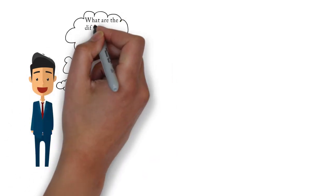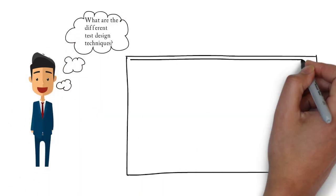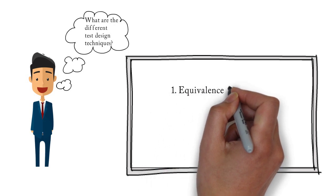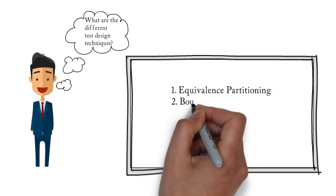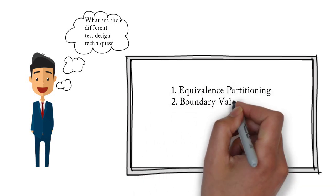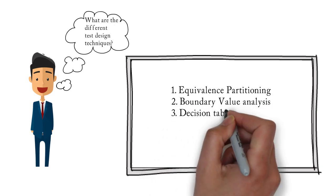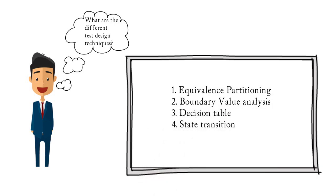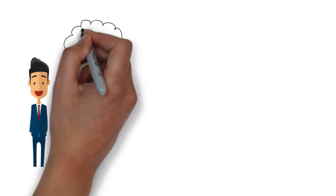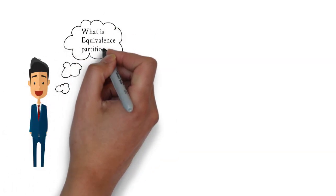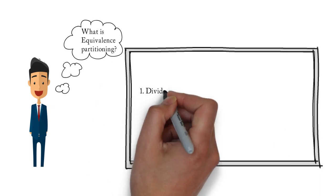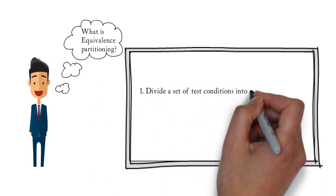The different test design techniques are: equivalence partitioning, boundary value analysis, decision table, and state transition. We will take each technique one by one, see what it is, and explain it with the help of an example. The first one is equivalence partitioning. Equivalence partitioning divides a set of test conditions into groups so that they can be considered the same — only one condition is required to test from each group.